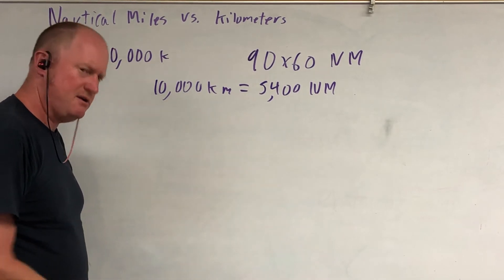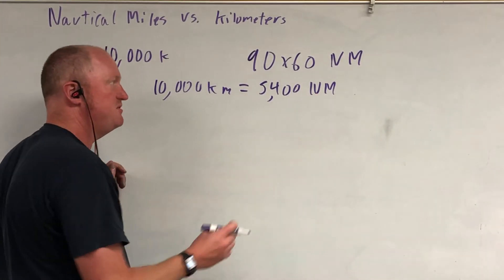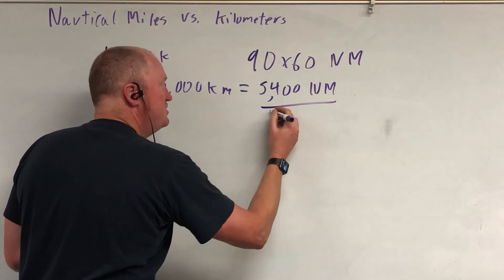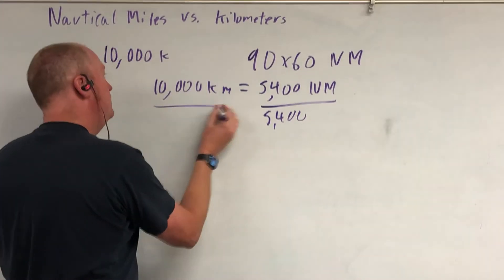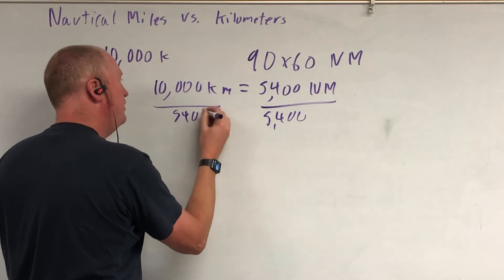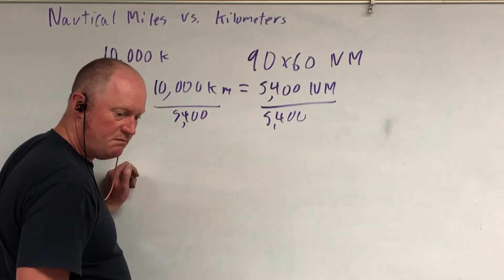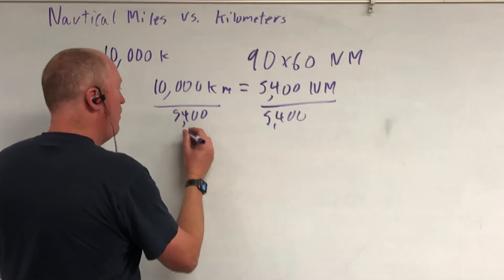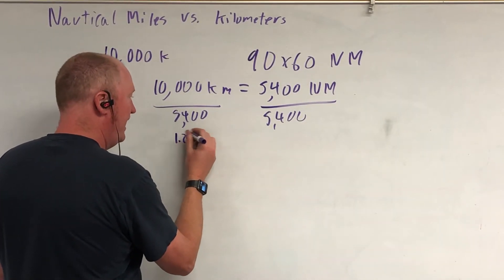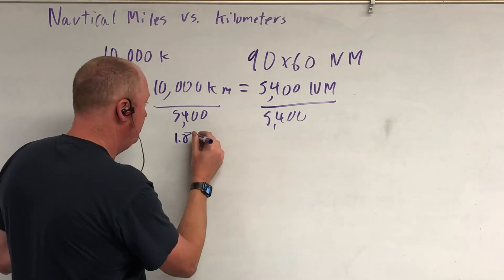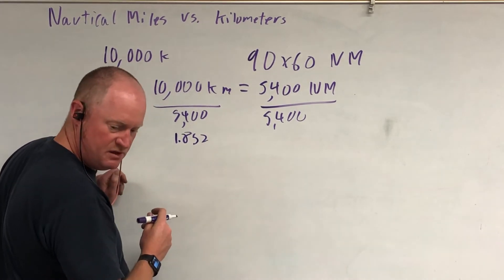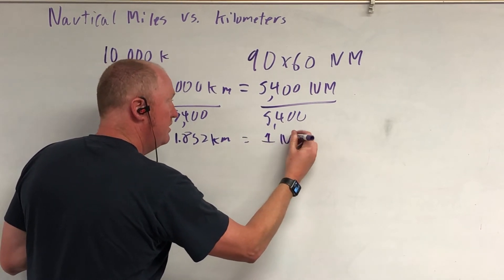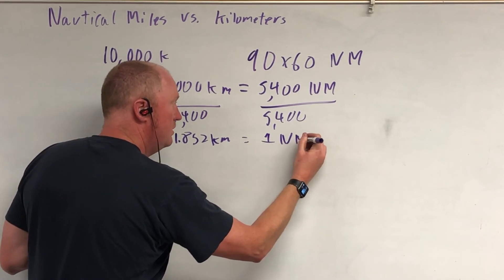The humans will be back. So, 10,000 kilometers equals 5,400 nautical miles. If you want to find out what one nautical mile is, divide both sides by 5,400. And what you get is approximately, oh boy, I wrote it down...